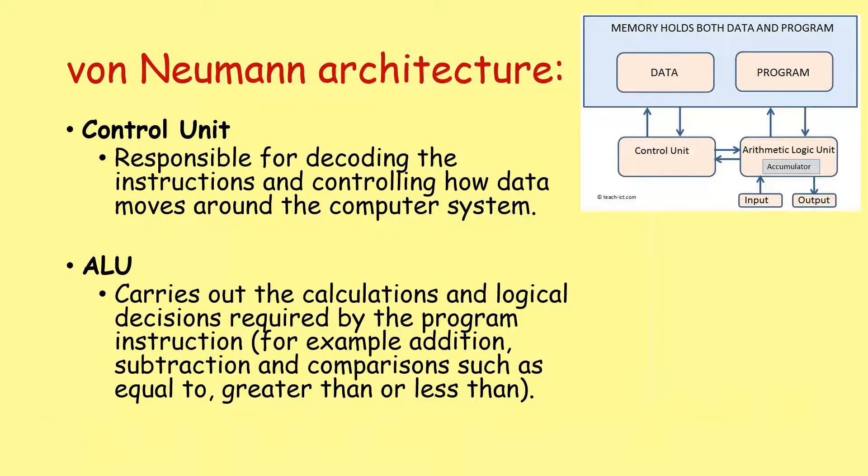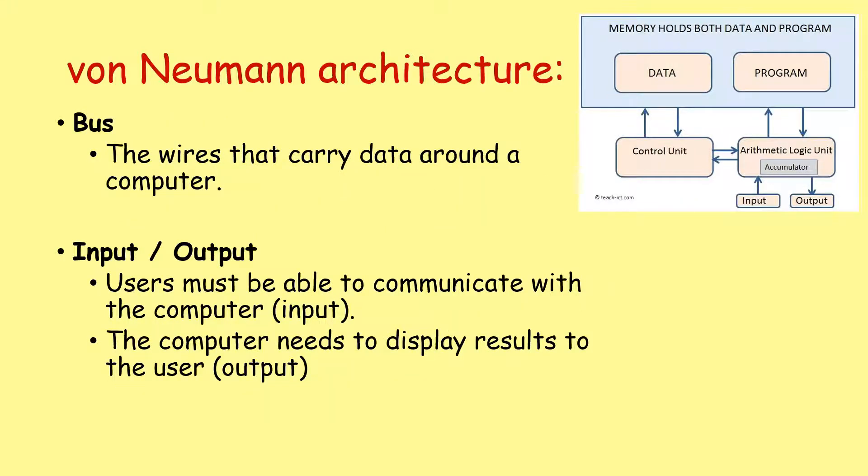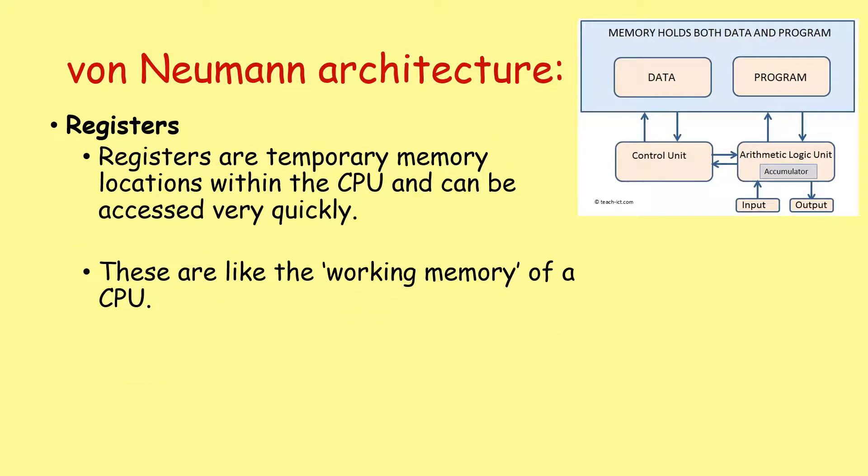We'll go through this again in case you've forgotten from the last lesson. The control unit is responsible for decoding the instructions and controlling how data moves around the computer system. The ALU is the arithmetic logic unit and it does the mathematical calculations, logical comparisons that are required by the computer. We've got buses, the wires that carry data around a computer. We've got input and output because users must be able to communicate with the computer and give it data, which is what we call input. And the computer needs a way of displaying results to the user, what we refer to as output. And we also have registers, temporary memory locations within the CPU that can be accessed very quickly. These are like the working memory of a CPU.